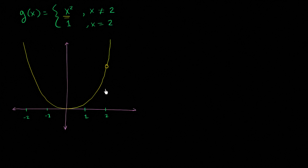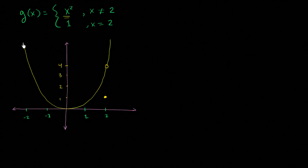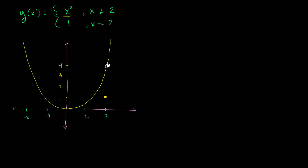But it's not x squared when x equals 2. So once again, when x equals 2 we should have a little bit of a discontinuity here — I'll draw a gap right over there. When x equals 2, the function is equal to 1. On the graph of x squared this would be 4, this would be 2, this would be 1, this would be 3. So at exactly x equals 2 it drops down to 1, and then it keeps going along x squared.